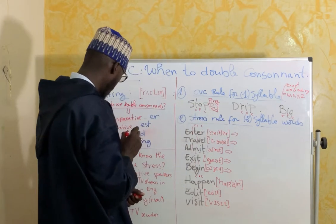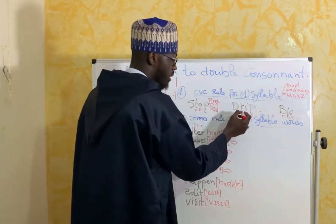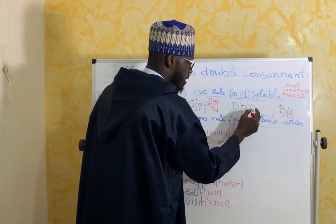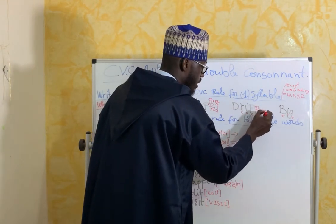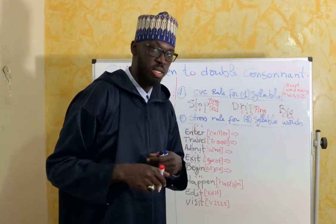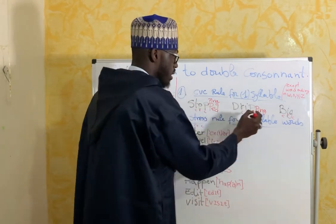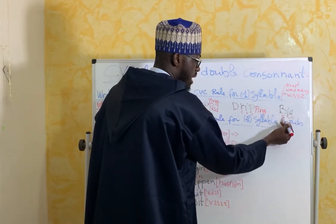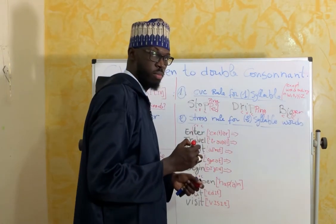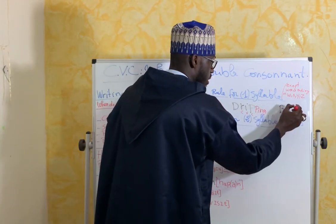Take 'drip' — one syllable, C-V-C, so we double: 'dripping.' It's dripping. A drip is dripping. It dripped. And 'big': C-V-C. For the comparative we put 'bigger,' for the superlative we say 'biggest.'